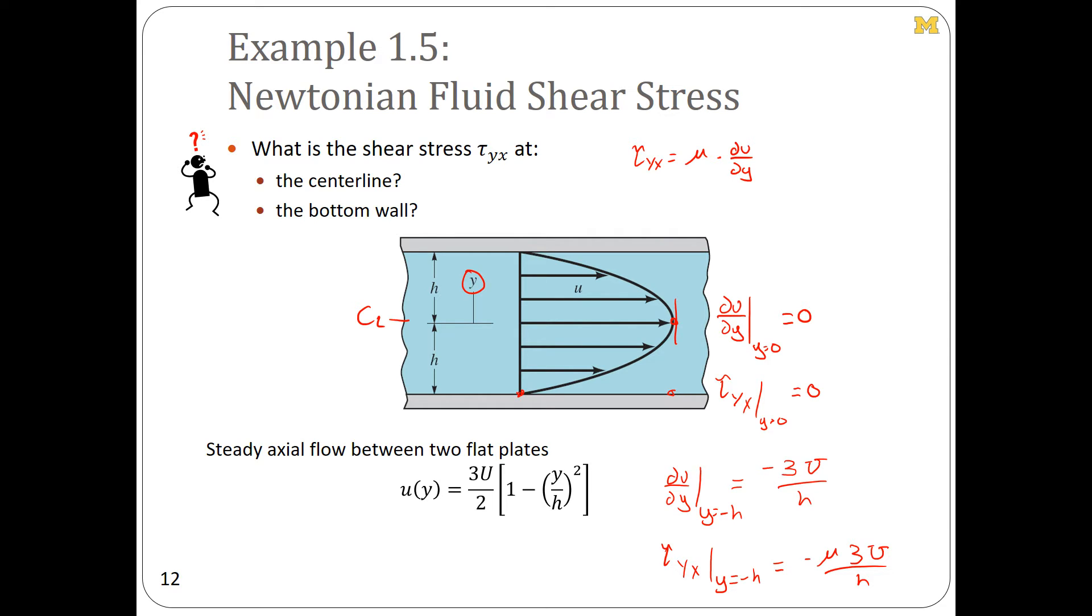Now a couple of observations before we move on from this. Note that if we plug in y equals positive or negative h into this equation for the flow velocity, we get 0. That is to say that the flow speed at the wall is 0. The slope of the flow speed, the du/dy, is clearly not 0 as we've seen—it's equal to negative 3u over h. But what we refer to as the no-slip condition dictates that...